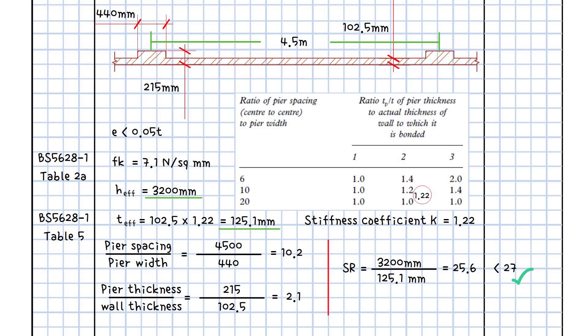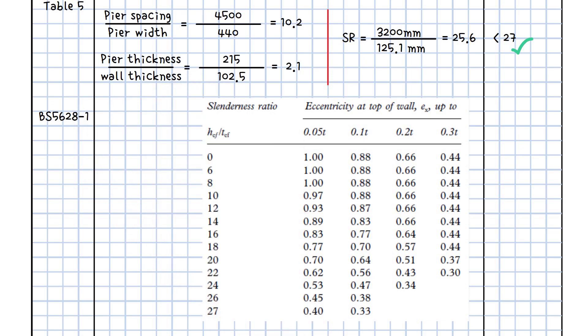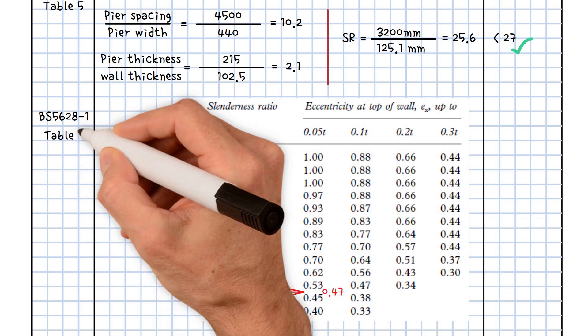As a result, using linear interpolation from BS 56281, capacity reduction factor beta equals 0.47, in table 7.